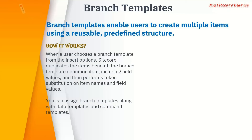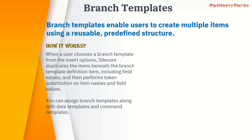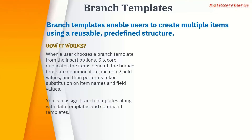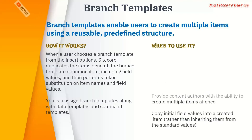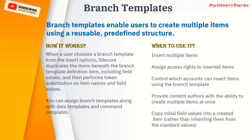You can assign a branch template along with data templates and command templates. The basic use case is when you want a predefined content tree. For example, inside an article template you might have a folder, a media folder, another folder with a PDF, and you want to duplicate that entire structure — you can do that with a branch template.